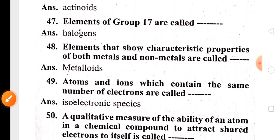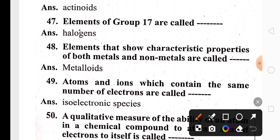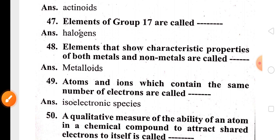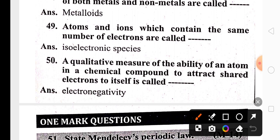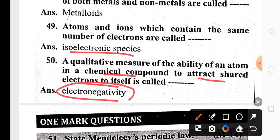Group 17 elements are commonly called halogens, and elements that show properties of both metals and non-metals are called metalloids. The ions having the same number of electrons are called isoelectronic species. The ability of an atom in a chemical compound to attract the shared pair of electrons is called electronegativity.